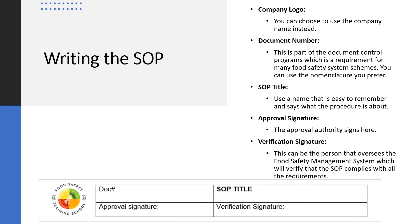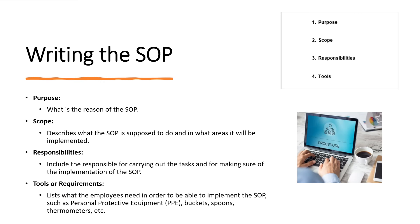In the first section we have the following: company logo — you can choose to use the company name instead, or you can omit this section. Document number — this is part of the document control program, which is a requirement for many food safety system schemes. You can use the nomenclature you prefer; if you don't have a document control program, that's okay. SOP title — use a name that is easy to remember and says what the procedure is about. Approval signature — the approval authority signs here; the department that implements the procedure is the best fit. Verification signature — this can be the person that oversees the food safety management system, for example the quality assurance manager.